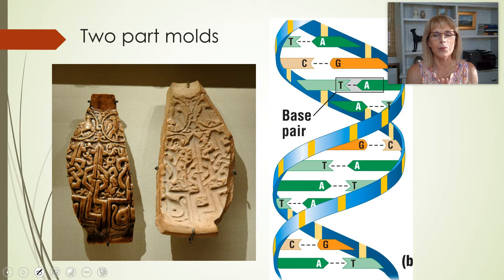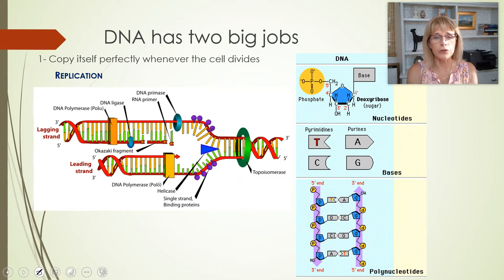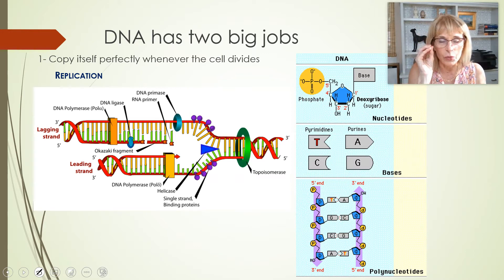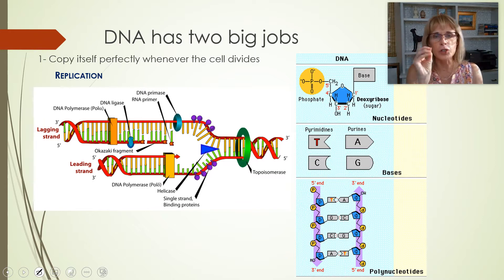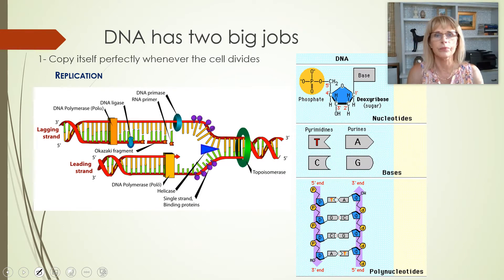DNA has got two big jobs. The first is that DNA stores information for how to make proteins - write that down. DNA's the reason that you've got it is it stores information for how to make proteins. You make the right proteins, you get a living cell, and you get a living you. Now DNA, in order to do what it needs to do, needs to be able to do two different things.